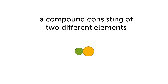This is a representation of a compound. A compound is a pure substance containing two or more different types of elements that are chemically combined in a fixed ratio. This compound is made up of one green and one yellow circle, and each of the colors represent different types of elements. So this is a compound consisting of two different types of elements that are chemically combined.